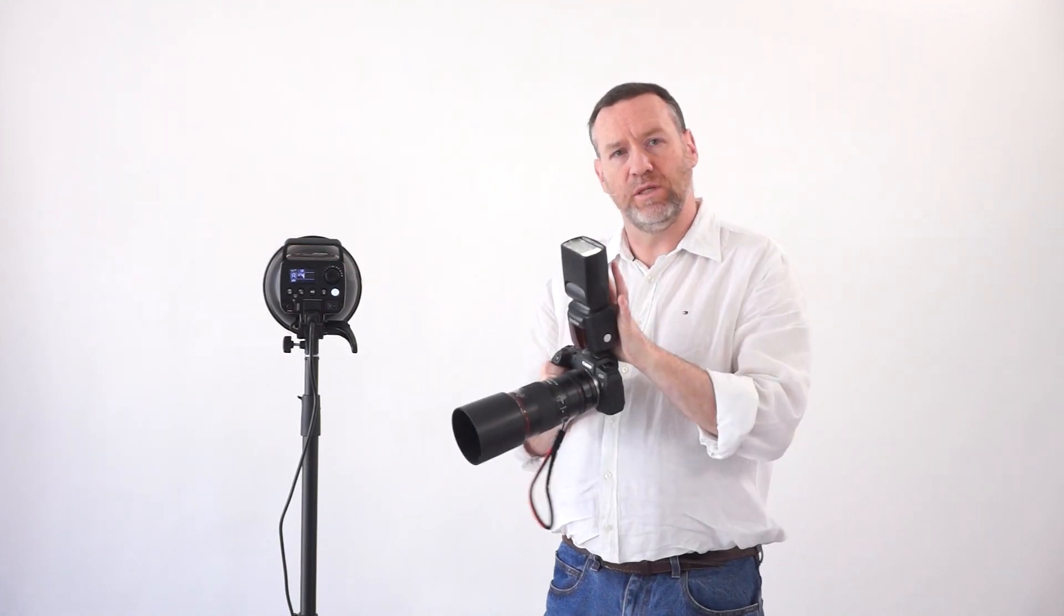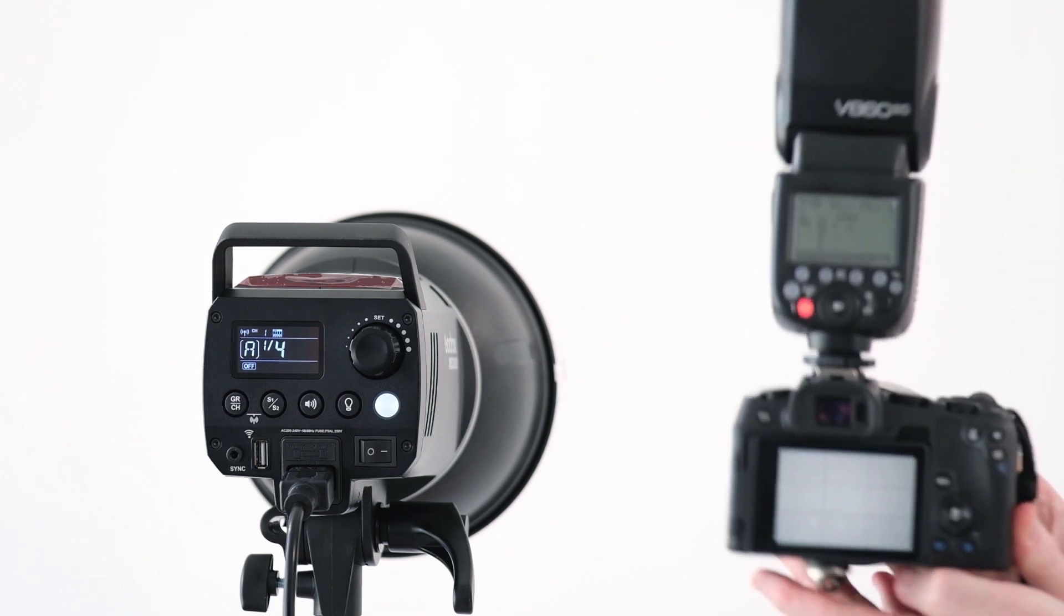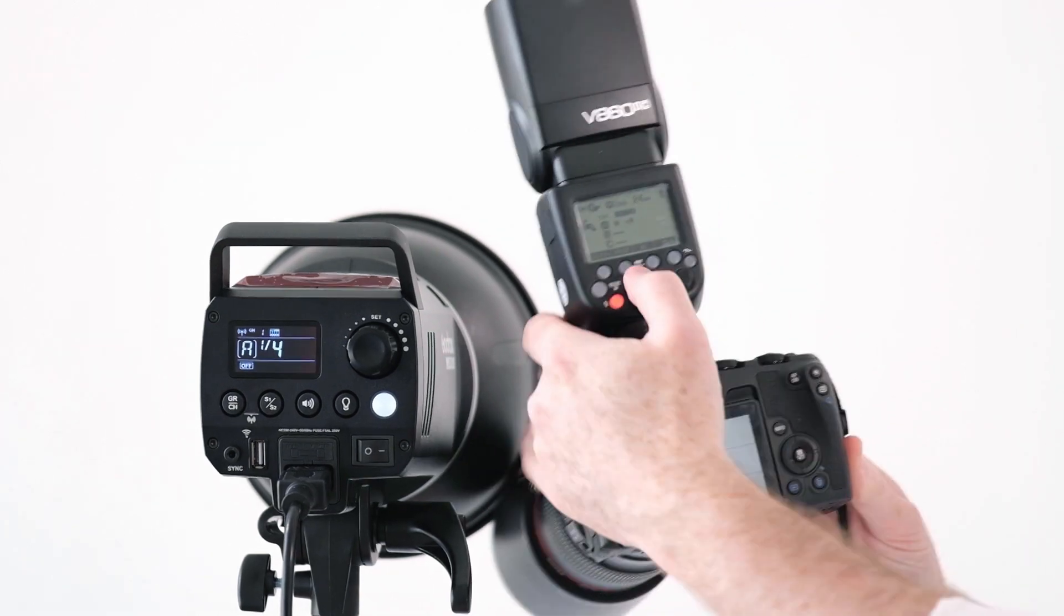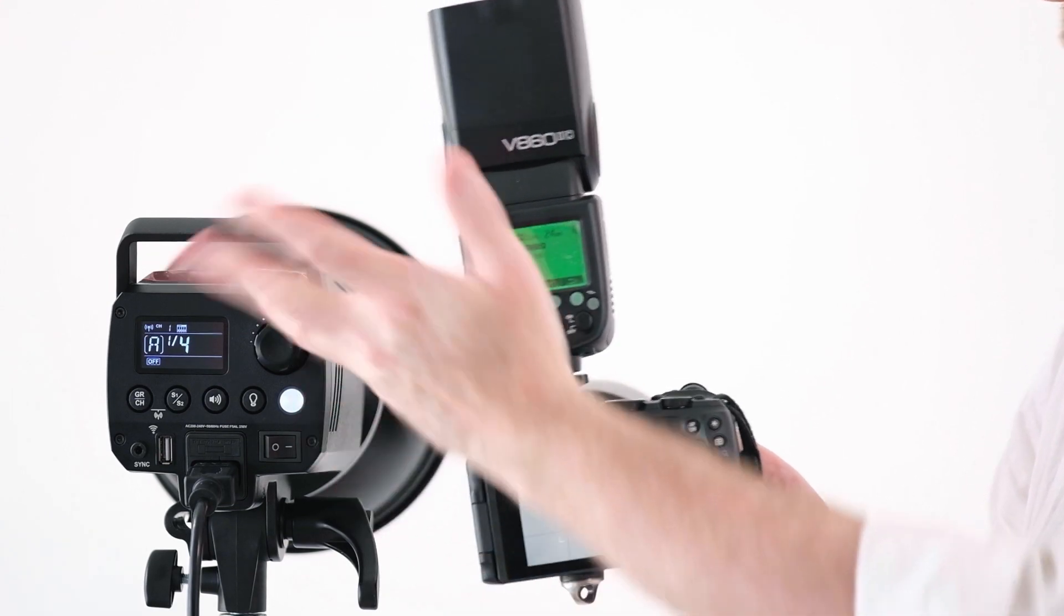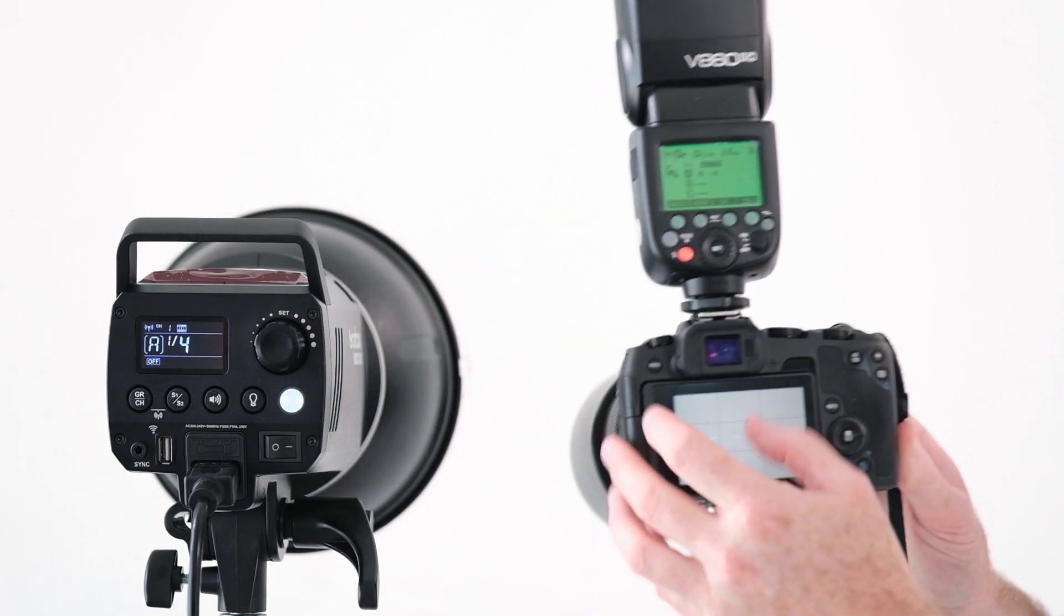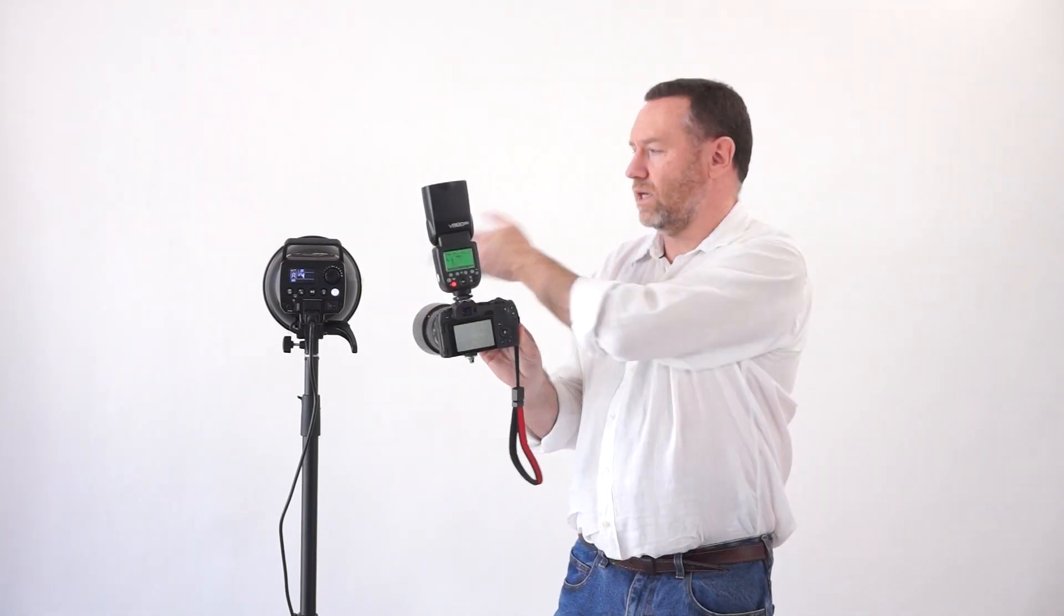With the Godox radio system, you can use a speedlight itself as a radio master. I've got this one currently dialed in to quarter power for group A, I've got the channels and everything dialed in. If I now take a test fire here, the actual studio strobe fired—the MS300 fired with that.